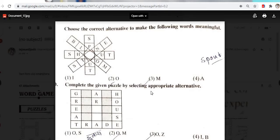Complete the given puzzle by selecting appropriate alternative. G-R-A-P-H. Graph. We can know P is there. In option, letter P is absent. G-R-O-A-R. A-R-O-M-A. Which word is this? Aroma. Aroma means sugandha. Now option number 2 is the correct option.